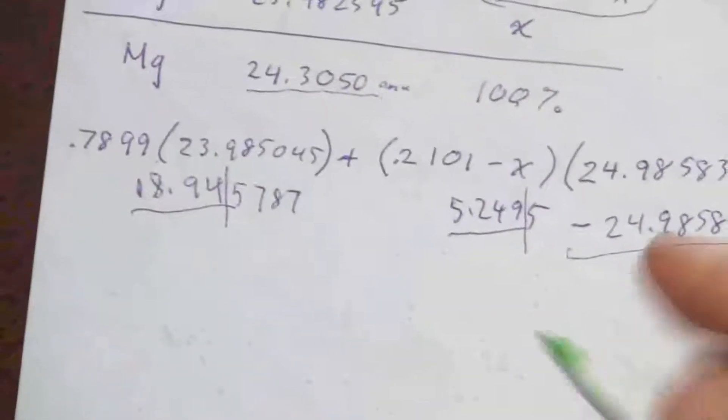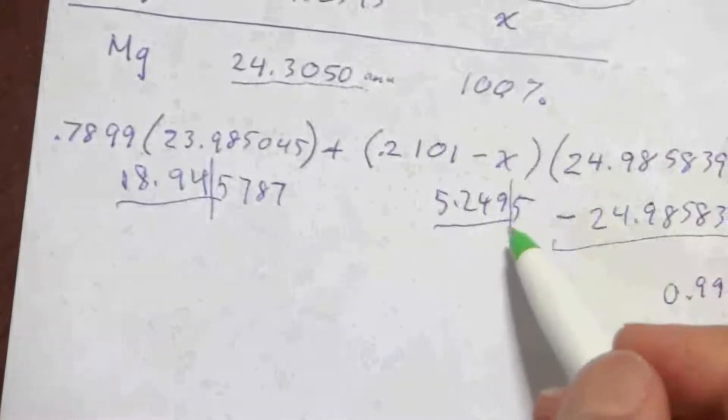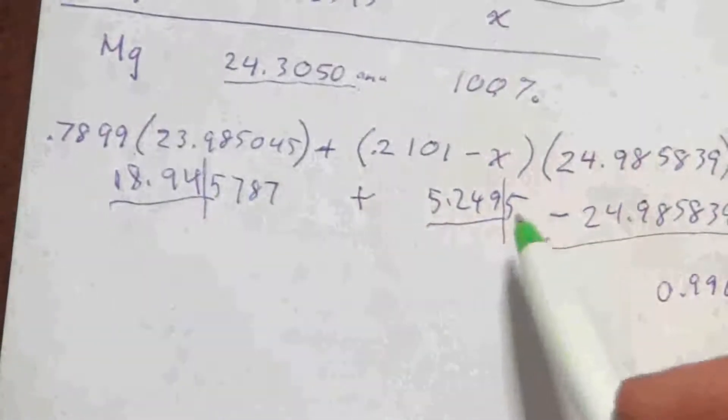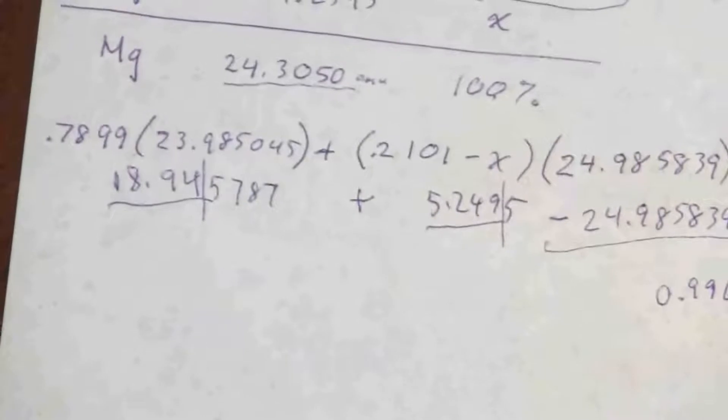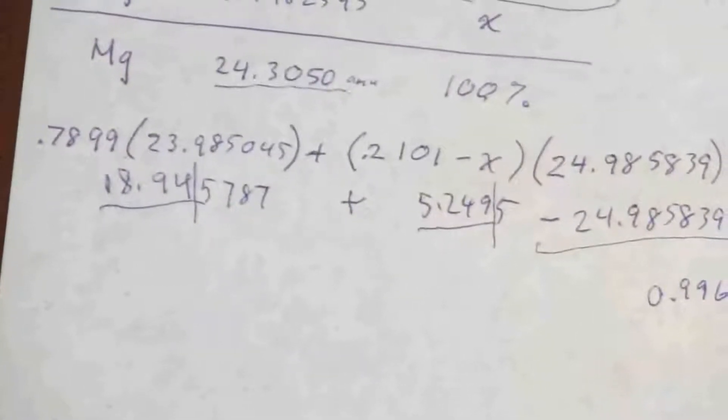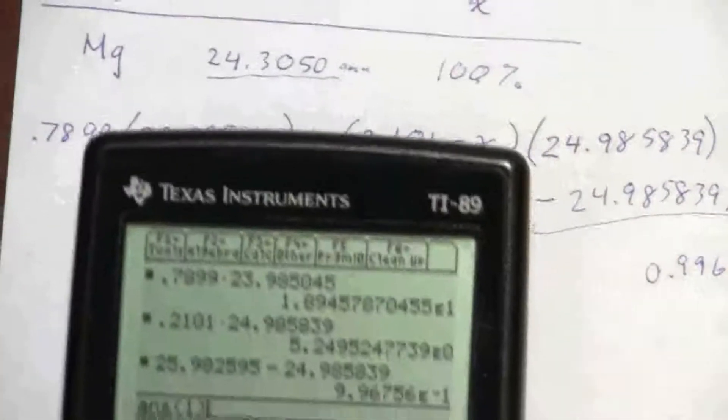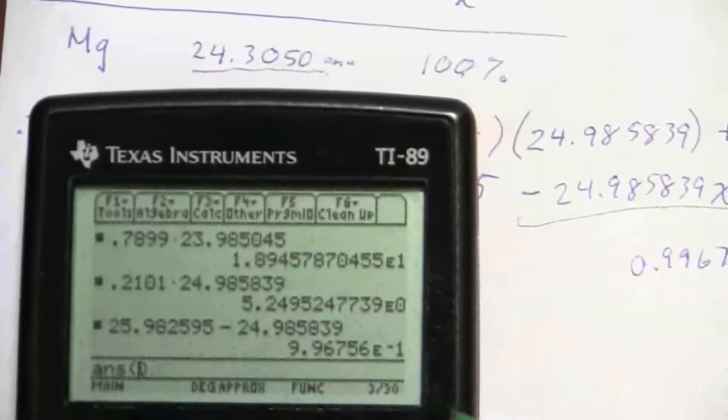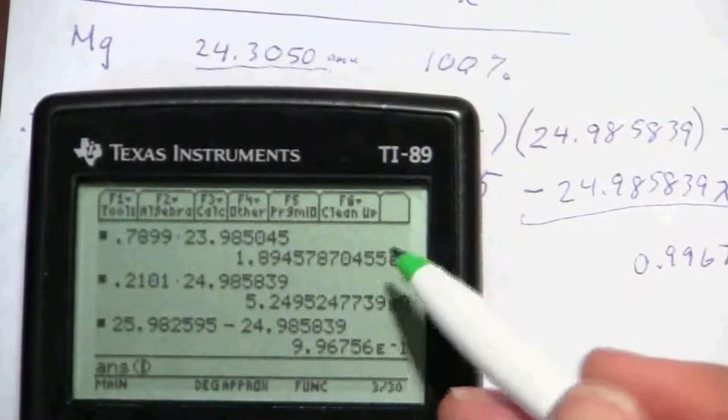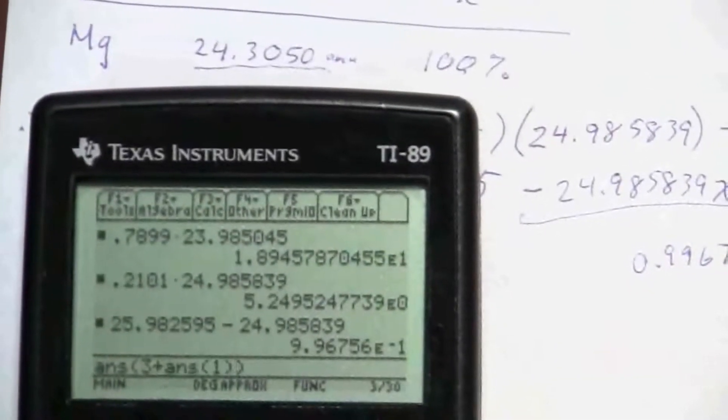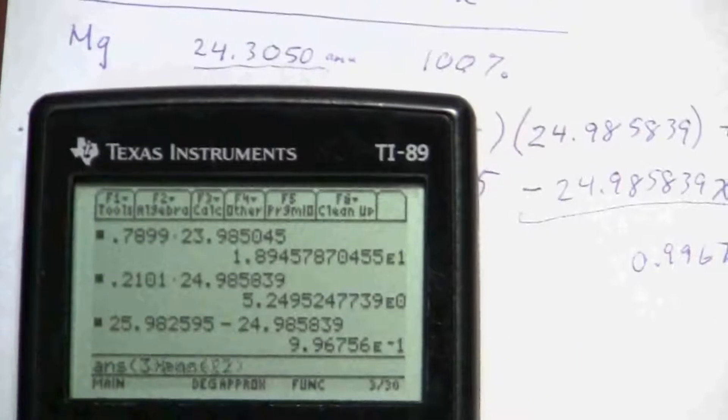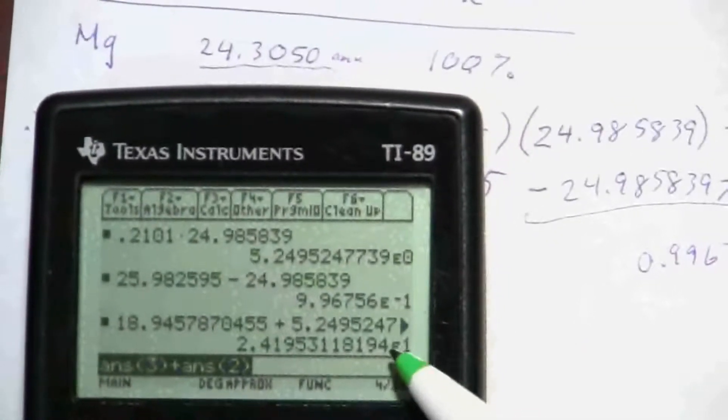And what I have here, I have two numbers that I calculated there, I need to add those together because that was a positive. So 18.94 plus 5.24. And what I can do on my calculator is it has the feature where I can recall previous answers. Answer 1 refers to the immediate answer, answer 2, answer 3. So I'm going to take answer 3 plus answer 2, keep my parentheses in.